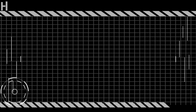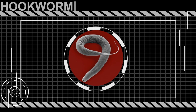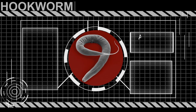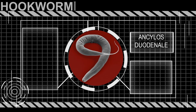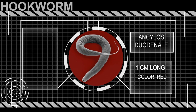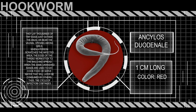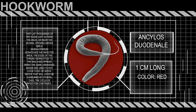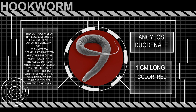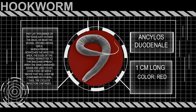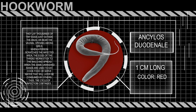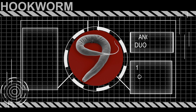Type 2: Hookworms, which are 1 cm long and red in colour. Any child who is anemic, very pale, or eats mud may have hookworms in their body.